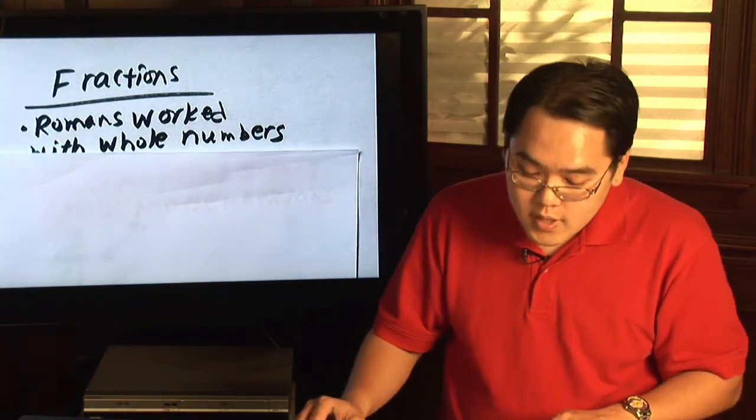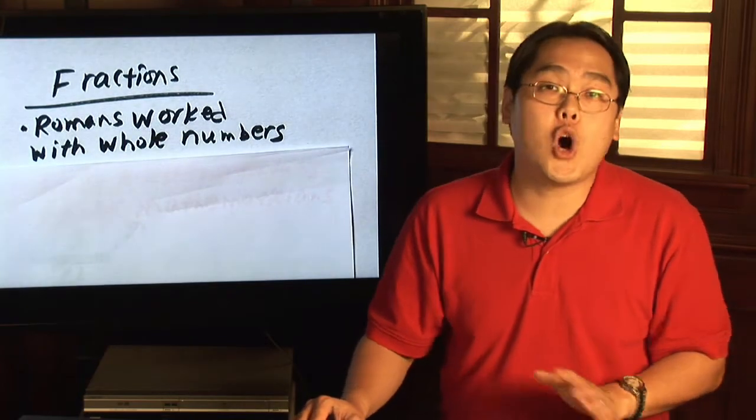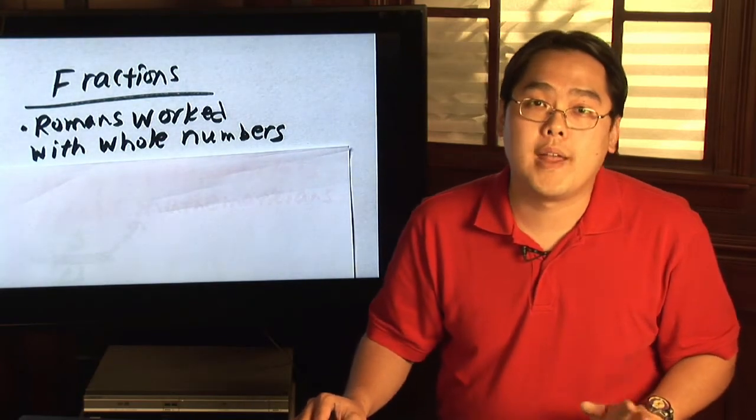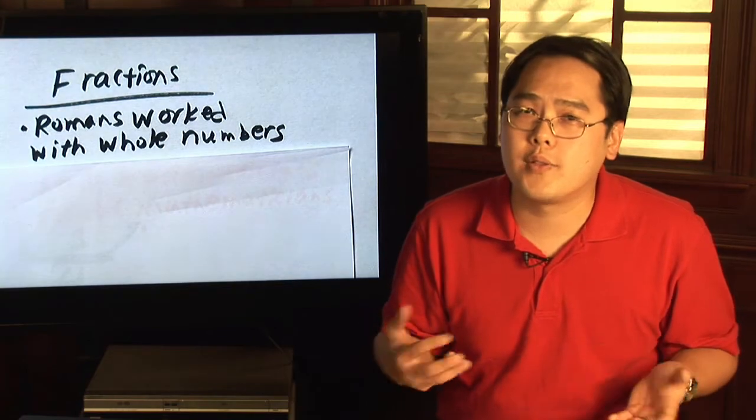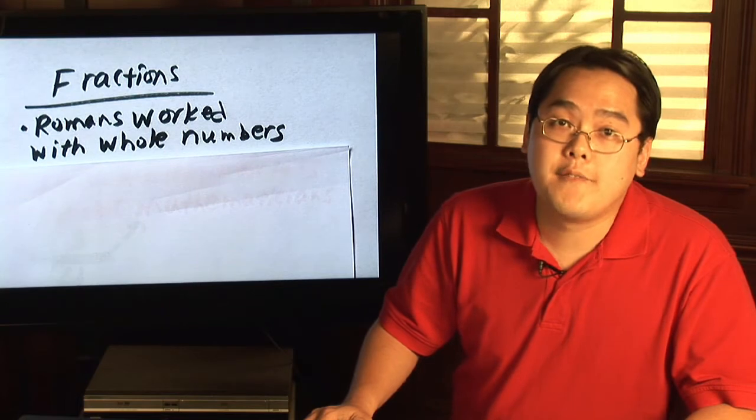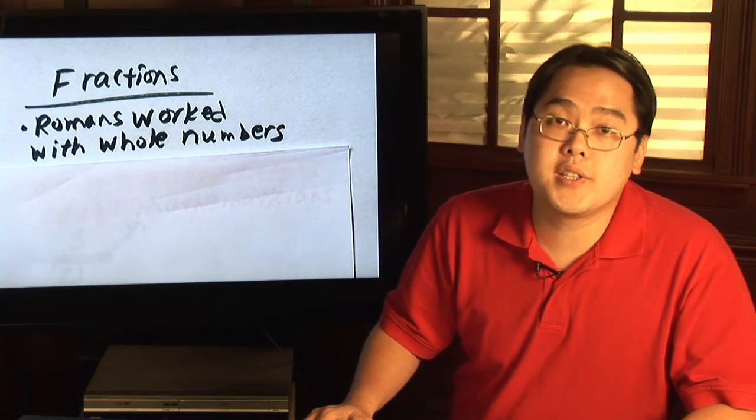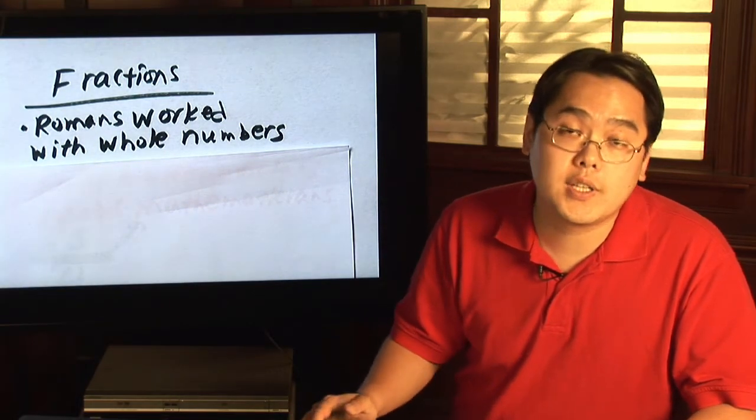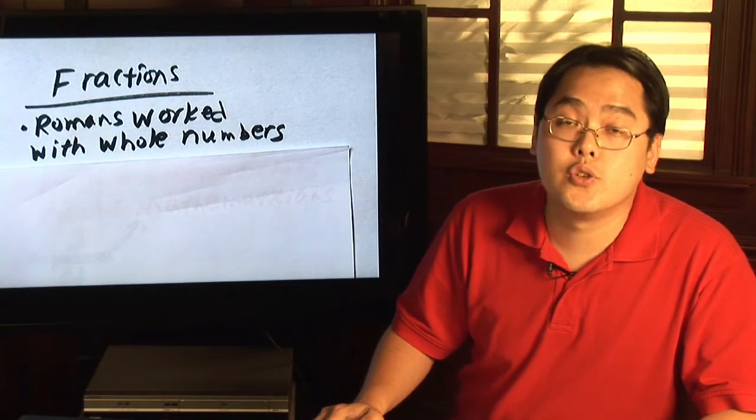So here's an example. Take the Romans. The Romans always worked with whole numbers. Now how did they get around the whole fraction idea? Well, they worked a lot with feet. If they wanted to work with parts of a foot, they would convert to a smaller unit.